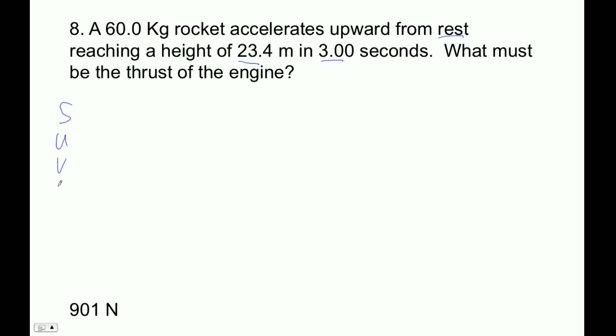S, U, V, A, and T. So displacement, initial velocity, final velocity, acceleration, time. Our initial velocity is zero. Our final velocity, we don't really care. Our acceleration, we deeply want to know. Our time is three seconds, and our displacement is 23.4 meters.